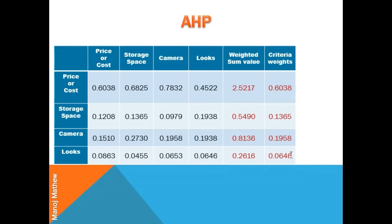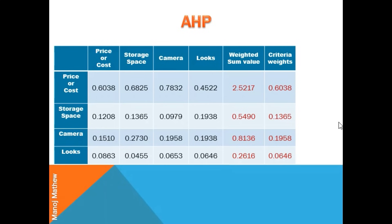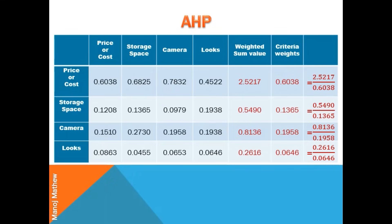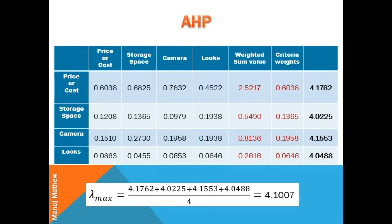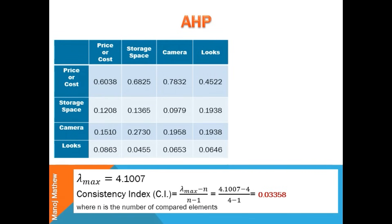On solving, we get the ratio values for each row. Lambda max is then calculated by taking the average of all these values. Next, we calculate the consistency index CI, which is given by the formula: lambda max minus n, divided by n minus 1. In this example, n is 4 as we have 4 criteria.